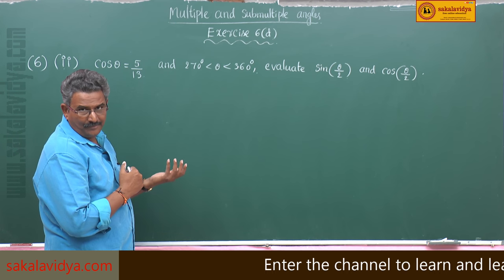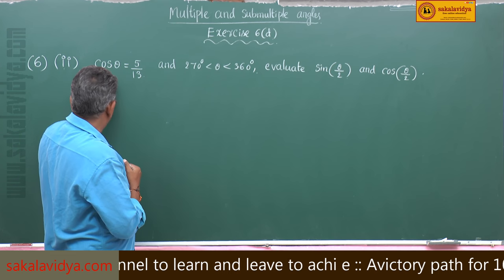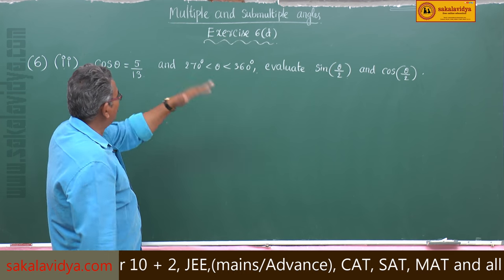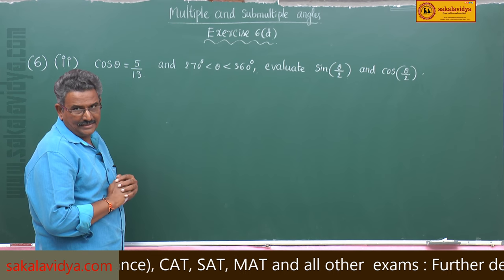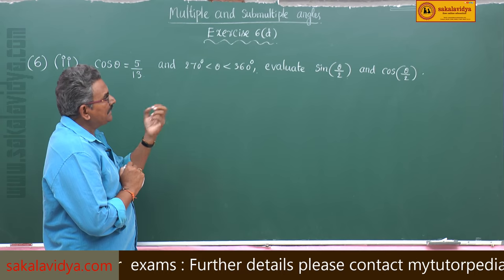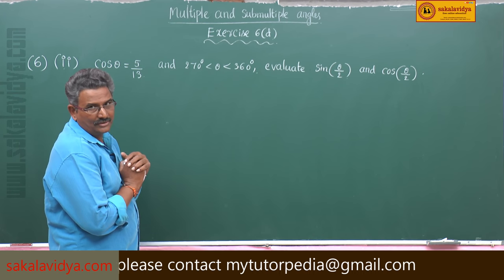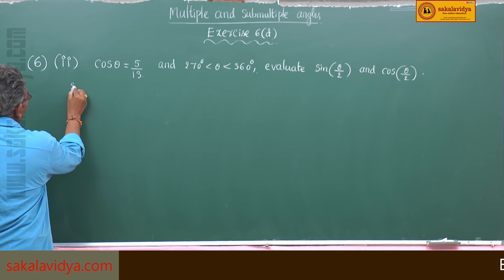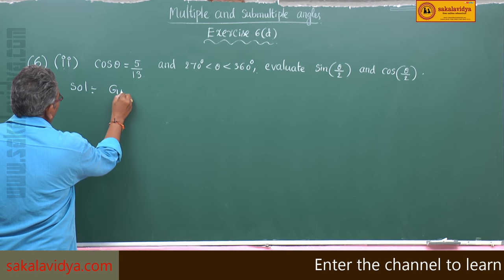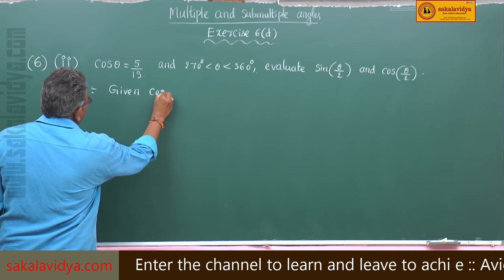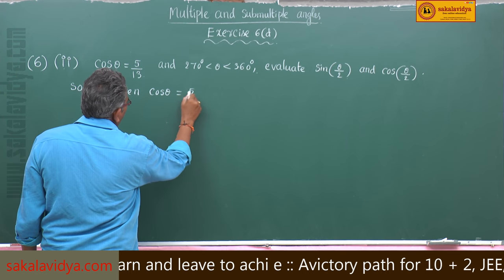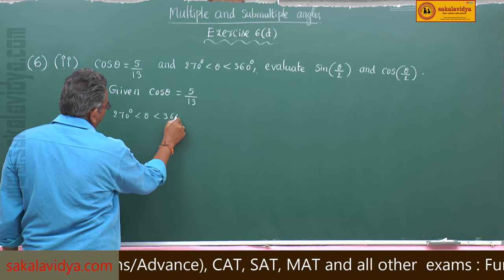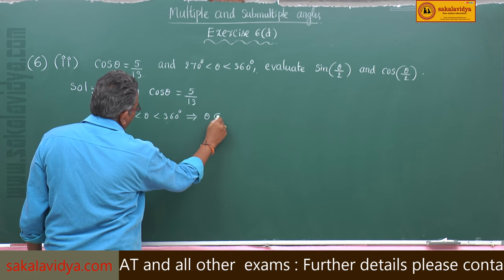We have the formula for sin(θ/2) in terms of cos θ, and the formula for cos(θ/2) in terms of cos θ. So we need not find out the other trigonometric ratios in this case. We can directly proceed, but we must carefully select the correct sign — that is the key criteria in this problem. Given cos θ = 5/13 and 270° < θ < 360°, that implies θ belongs to the fourth quadrant.